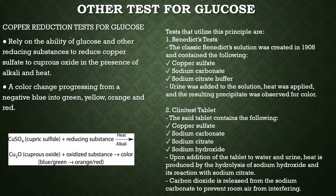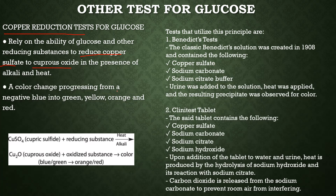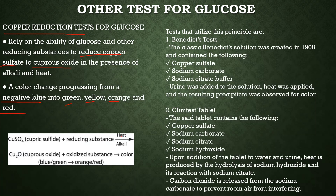The other test for glucose is the copper reduction test, which relies on the ability of glucose and other reducing substances to reduce copper sulfate to cuprous oxide in the presence of alkali and heat. A color change progresses from negative blue to green, yellow, orange, and red.